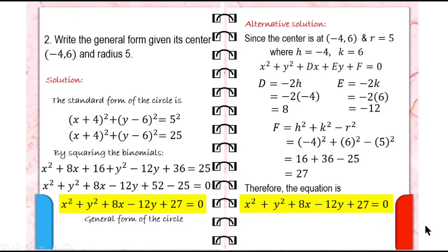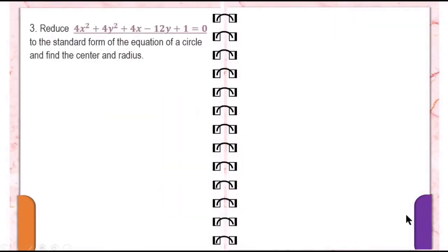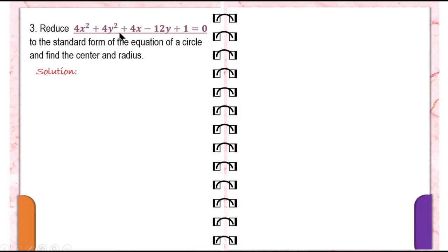But what if the general equation is already given and we have to reduce it to its standard form? For example, problem number 3: Reduce 4x squared plus 4y squared plus 4x minus 12y plus 1 equals 0 to the standard form of the equation of a circle, and find the center and radius. The given general equation has a numerical coefficient of 4.